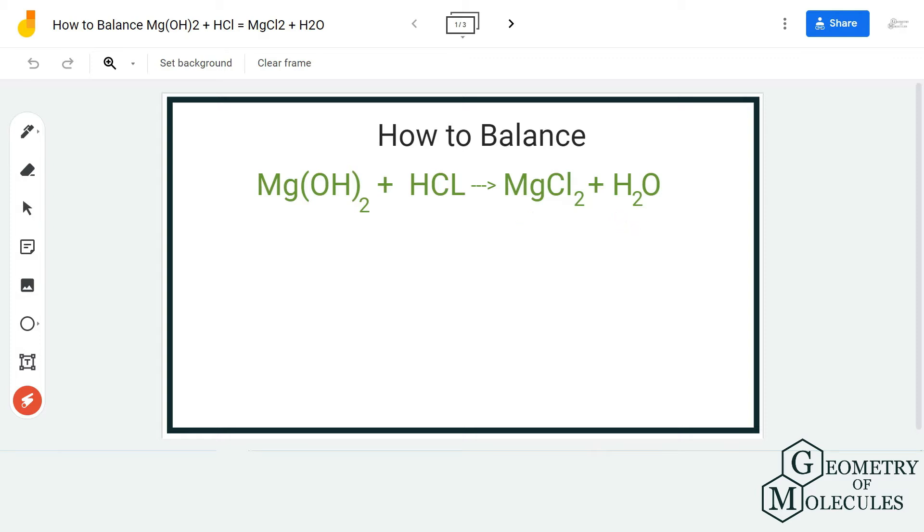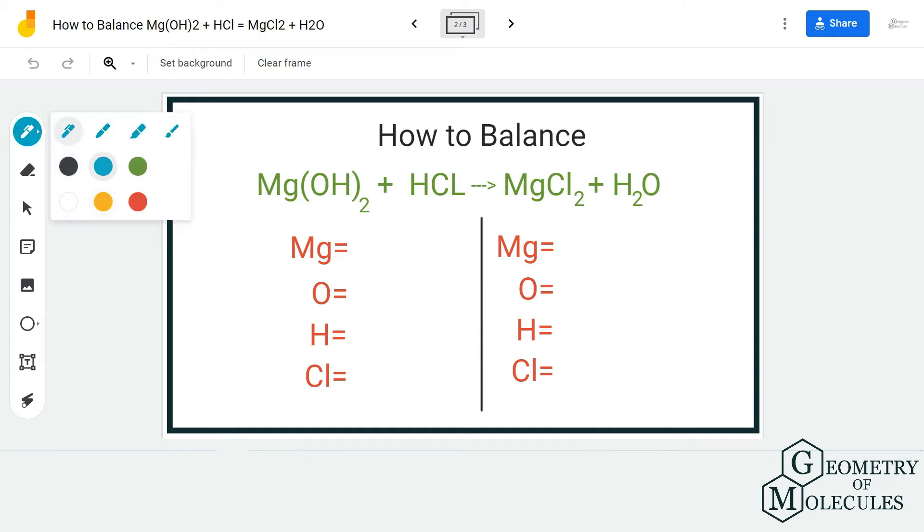To balance this equation we first need to know the number of atoms on both sides. For the reactant side we have one magnesium atom and that's the same for the product side as well, so place one on both sides. When you come to oxygen atoms, we have two oxygen atoms over here because there's a coefficient two, so place two. On the product side we have one oxygen atom, so place one.